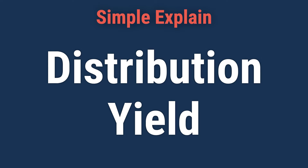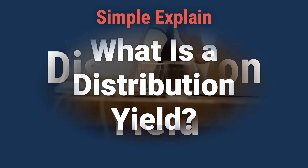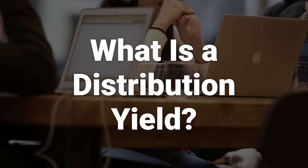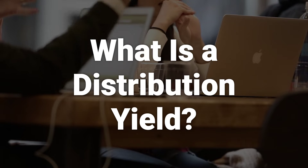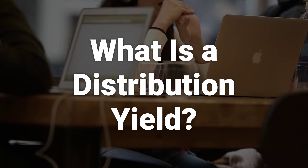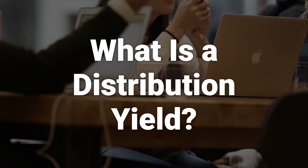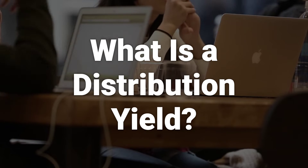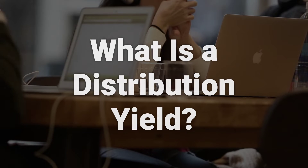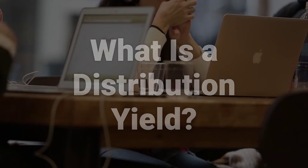Today, we will talk about distribution yield — definition, what it measures, and calculation. A distribution yield measures the cash flow paid by investment vehicles like ETFs or real estate investment trusts. Instead of calculating the yield based on an aggregate of distributions, the most recent distribution is annualized and divided by the net asset value of the security at the time of the payment.